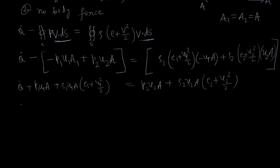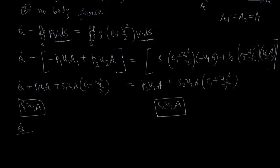Now on the left side we divide by rho1·U1·A and on the right side by rho2·U2·A. We know that rho1·U1·A equals rho2·U2·A from the continuity equation. So this becomes Q-dot divided by rho1·U1·A plus P1/rho1 plus E1 plus U1²/2.